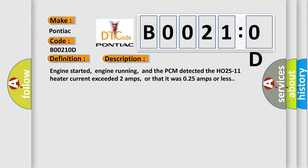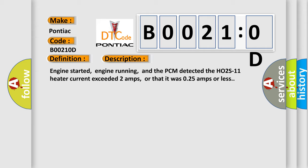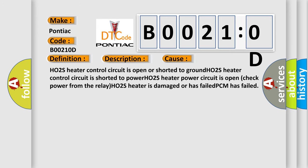This diagnostic error occurs most often in these cases: HO2S heater control circuit is open or shorted to ground, HO2S heater control circuit is shorted to power, HO2S heater power circuit is open. Check power from the relay. HO2S heater is damaged or has failed. PCM has failed.